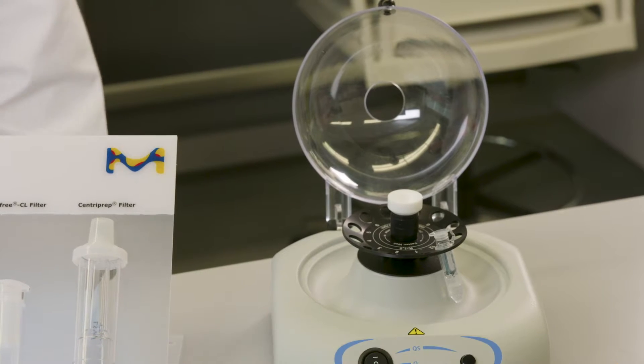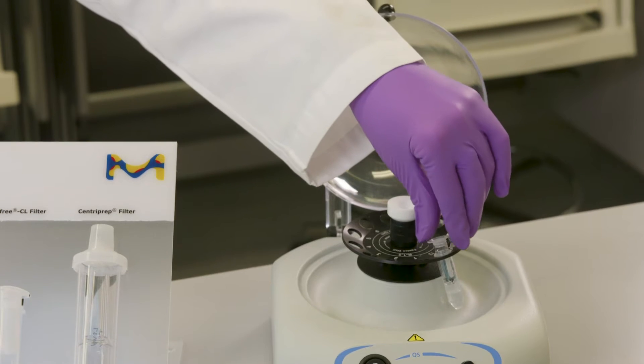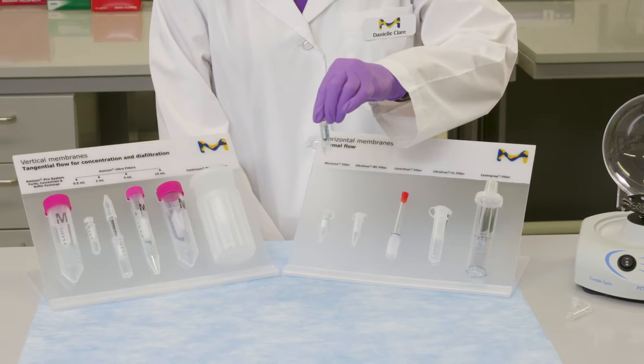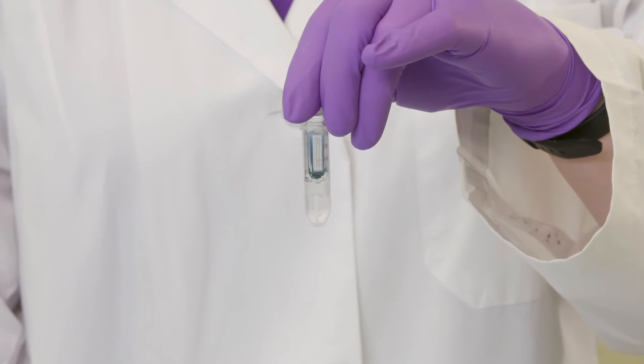After you've concentrated or desalted your sample using an ultrafiltration centrifugal concentrator like a Microcon or Amicon Ultra, your final ending volume may only be a few microliters.